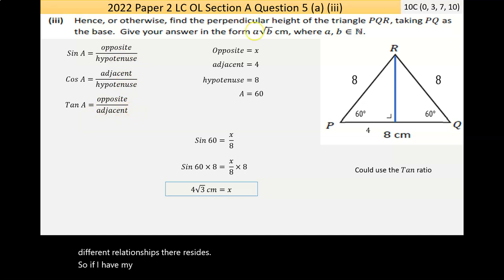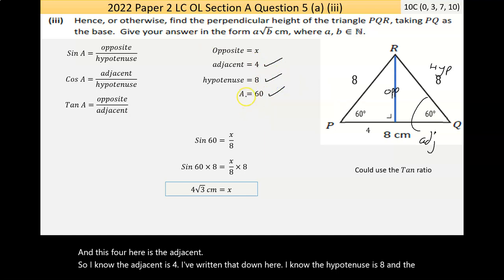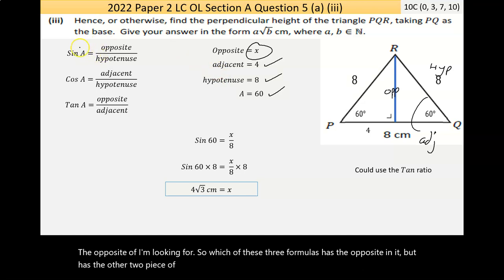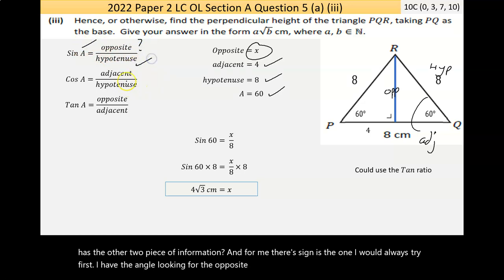So if I have my triangle here, I'm going to focus on this one here. If this is the angle I'm looking at, this is the opposite, this is the hypotenuse, and this 4 here is the adjacent. So I know the adjacent is 4. I know the hypotenuse is 8, and the angle that I'm focusing on is 60. The opposite is what I'm looking for. So which of these three formulas has the opposite in it but has the other two pieces of information? And for me, sine is the one I would always try first. I have the angle, looking for the opposite, I have the hypotenuse. I have two of the three things, therefore this will work.